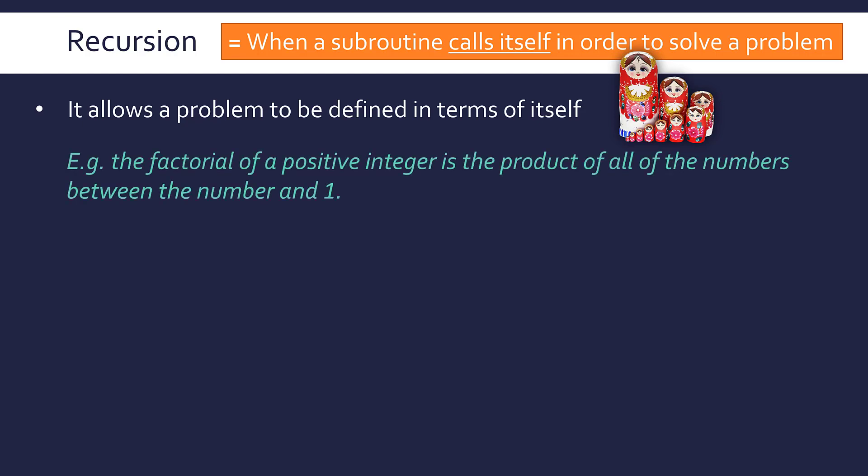Code to calculate factorials is used in every other video on recursion. So you have to forgive me, but it's a great example to get started. The factorial of a positive integer is the product of all of the numbers between the number and one. So you're multiplying all of the numbers from that number all the way down to one.